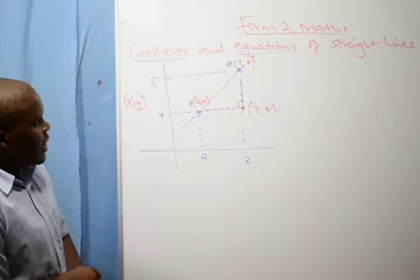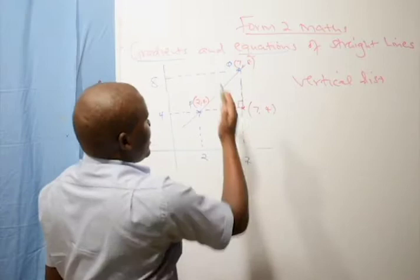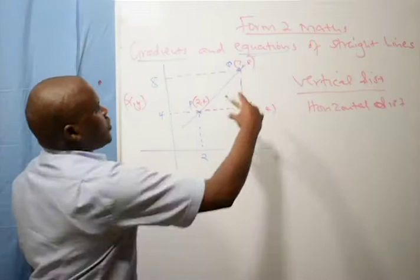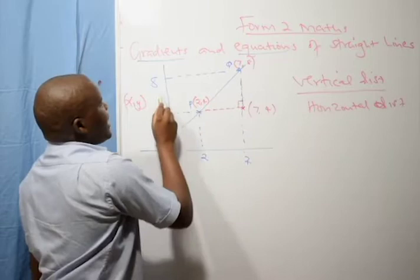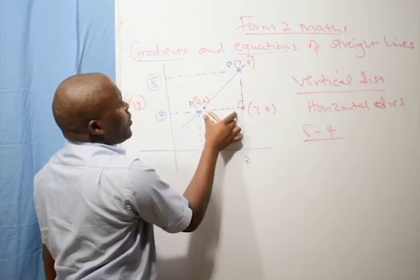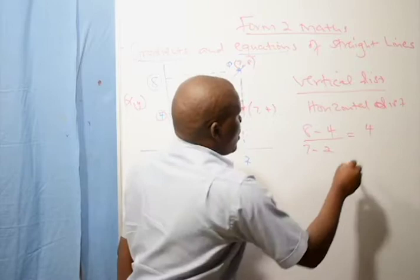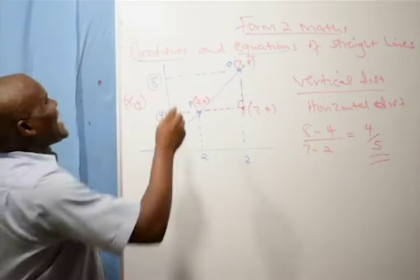When finding the gradient of that line, it is the vertical distance over the horizontal distance. The vertical distance: the unit here is four and here is eight, so the difference is eight minus four. The horizontal distance: from here to here is seven minus two. So we have four over five, which becomes the gradient — the slopeness — of that line.